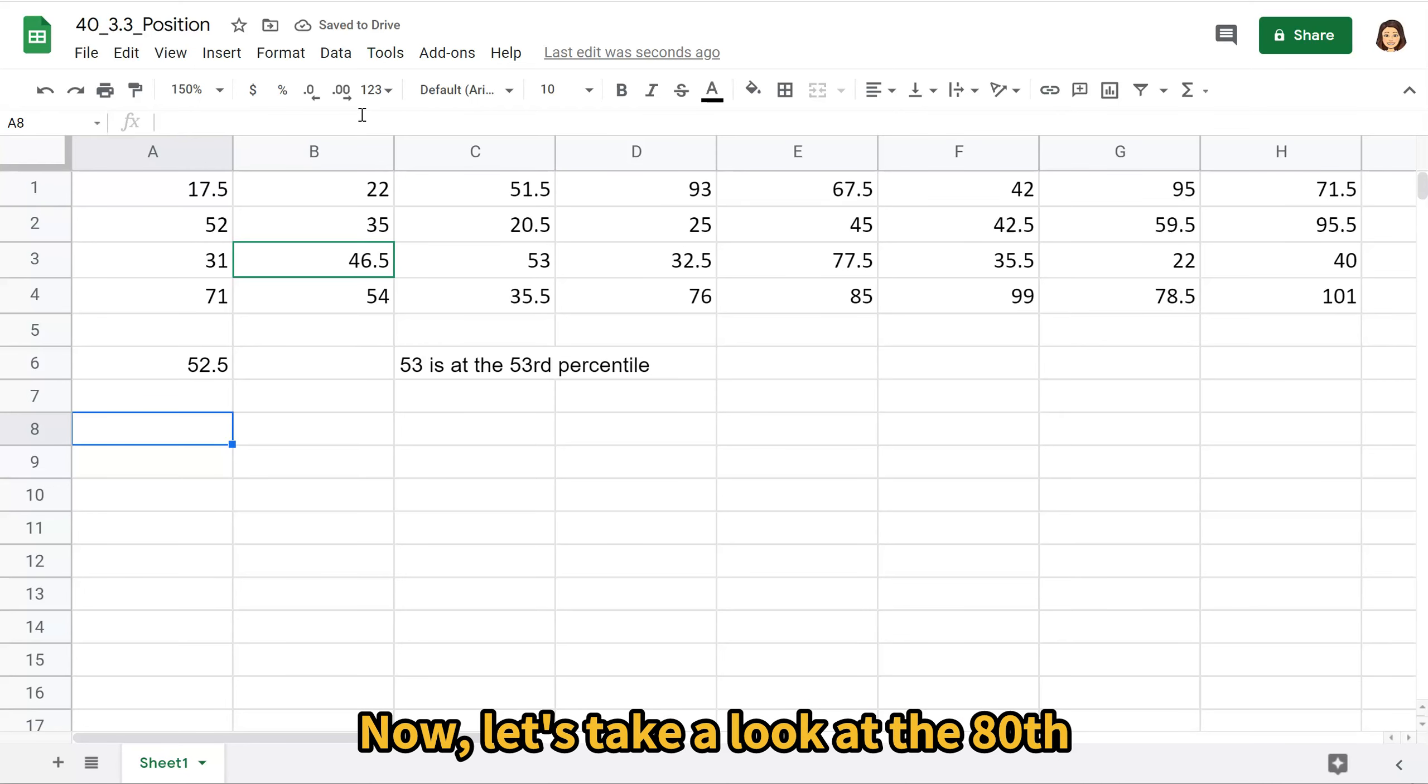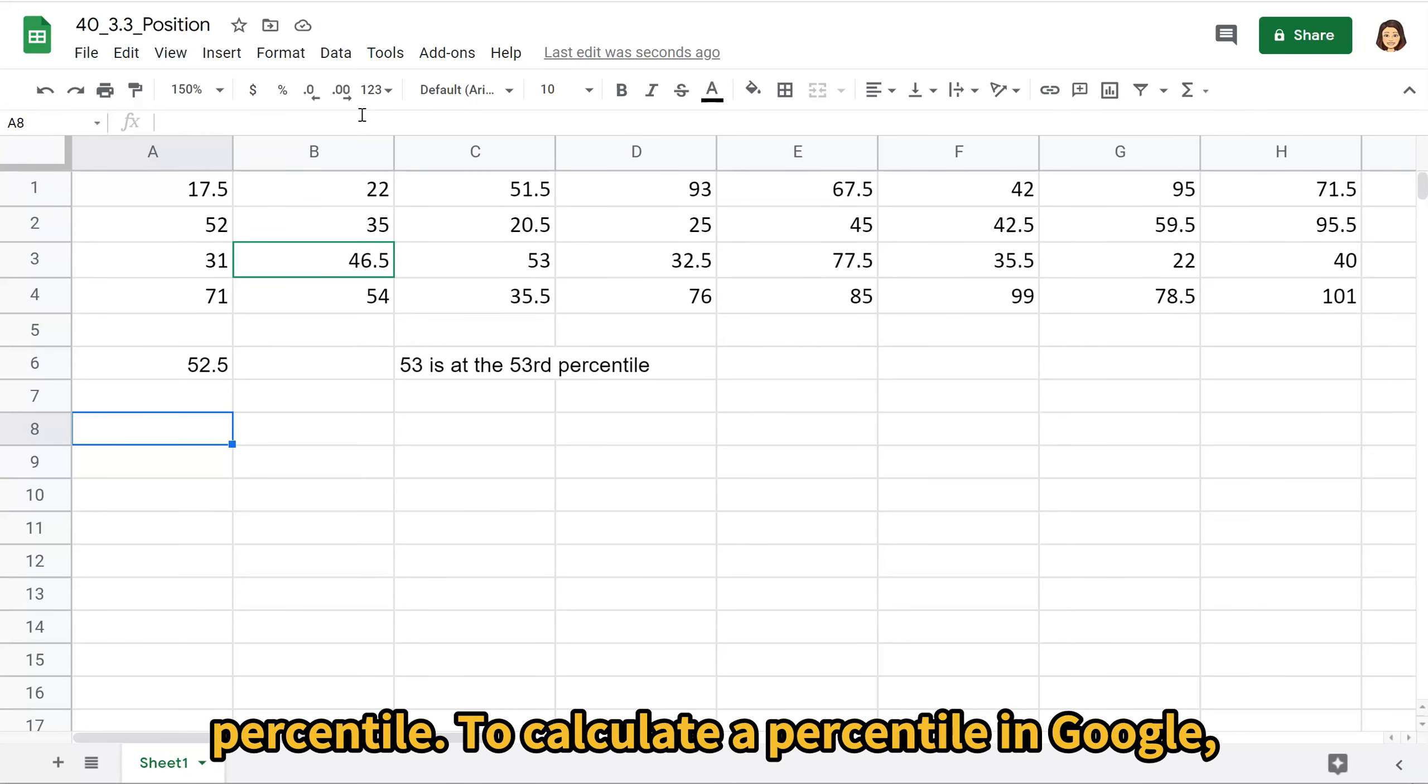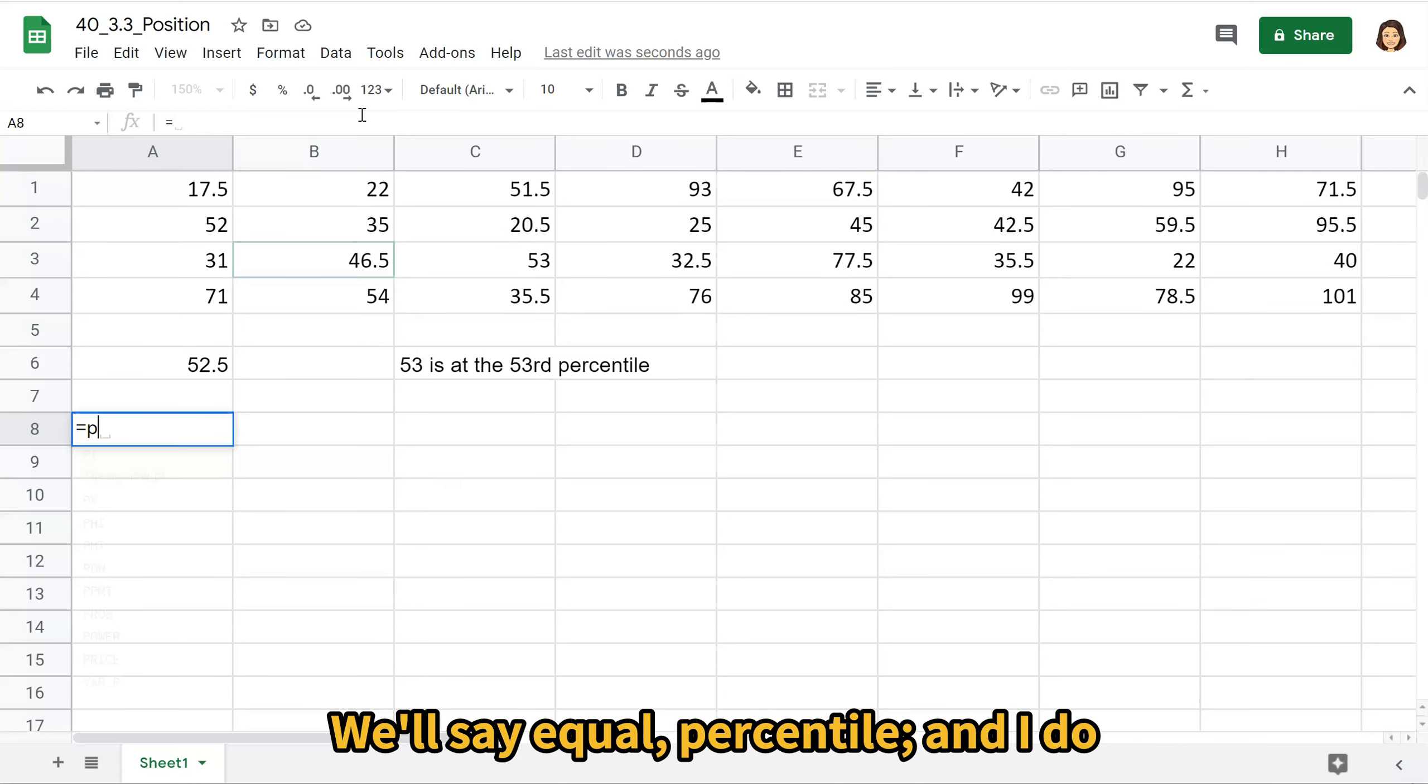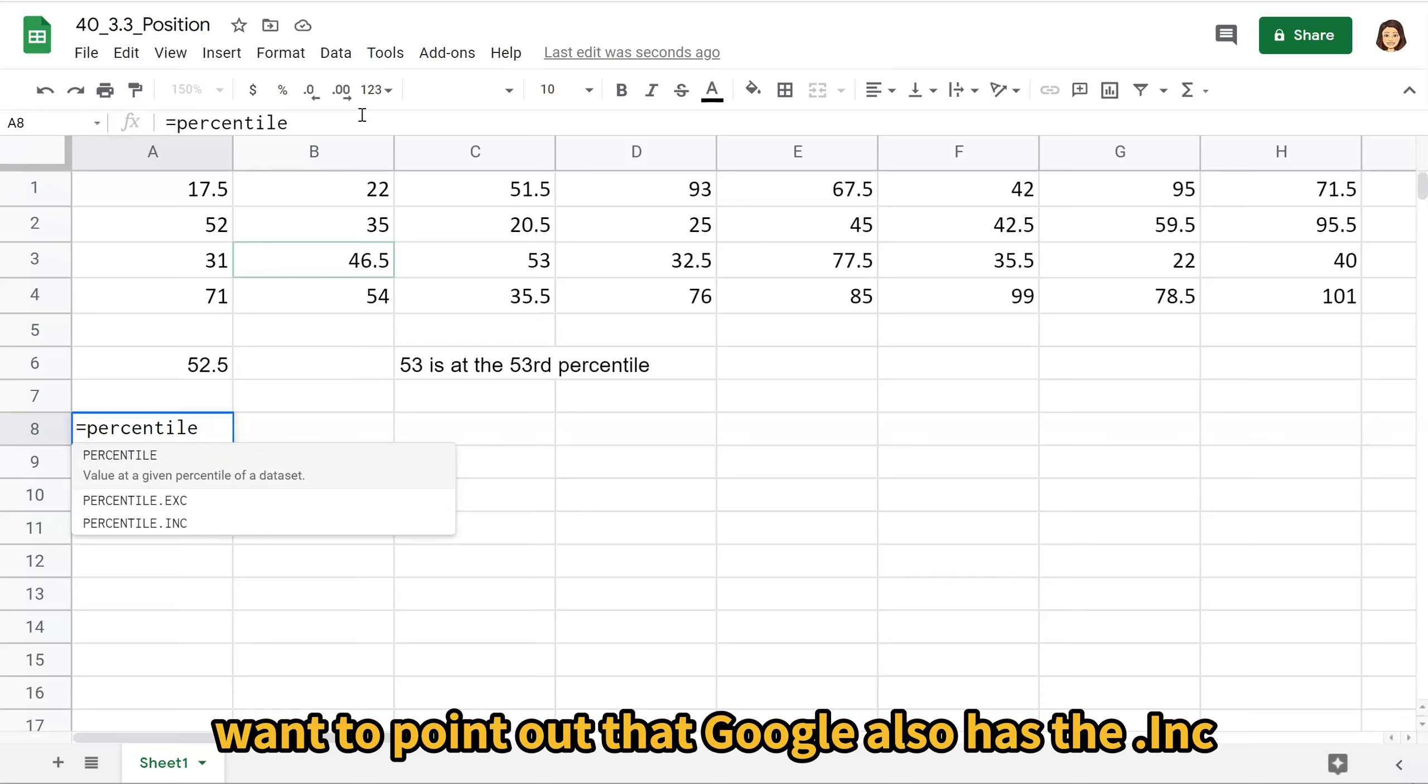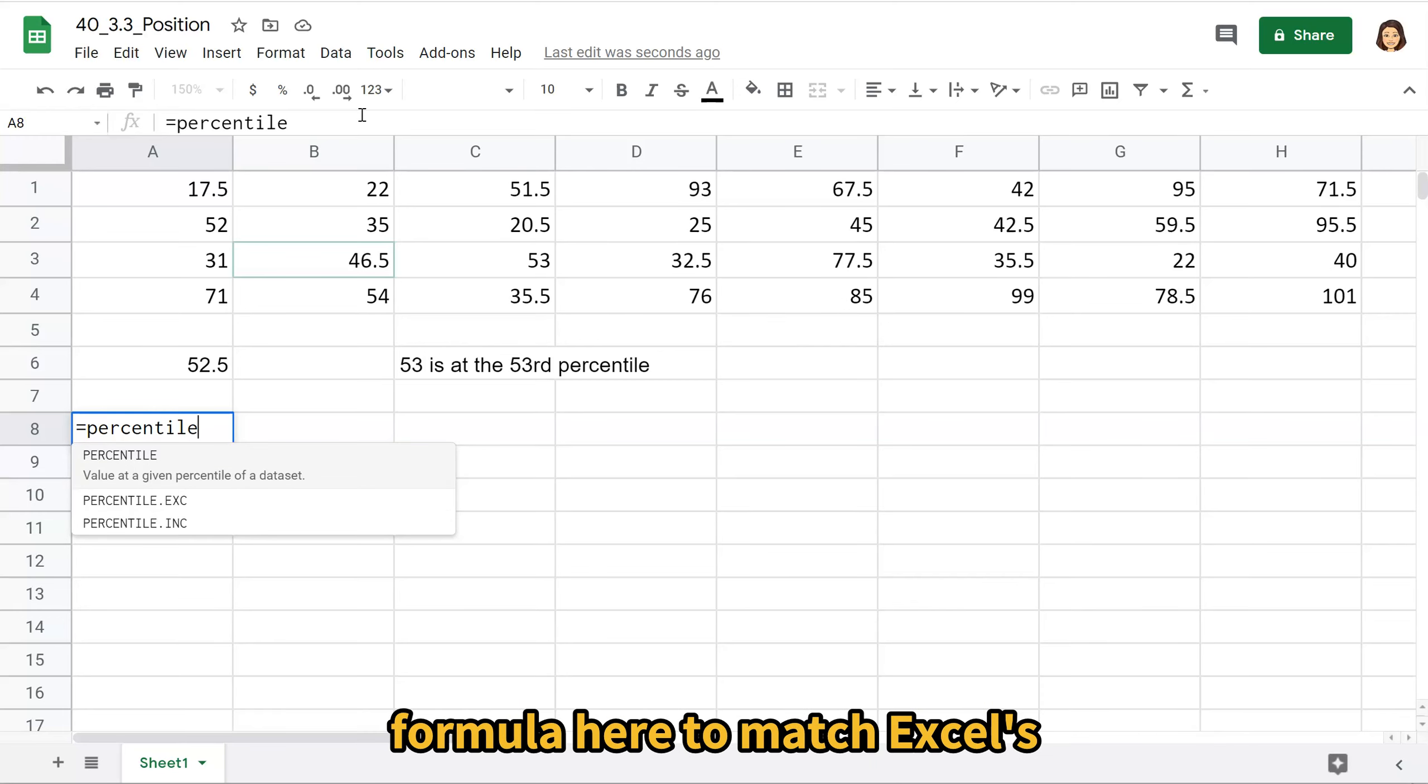Now let's take a look at the 80th percentile. To calculate a percentile in Google, we'll say equal PERCENTILE. And I do want to point out that Google also has the .inc formula here to match Excel's .inc, including all of the values.